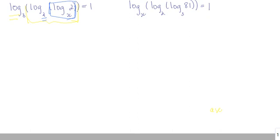You need to get rid of this log, so you write it as an exponent. I'm going to go from the outside in, so if I get rid of that log or write it as an exponent, you go 3 to the 1 equals the argument, which is log base 2 of log base 2 of x.